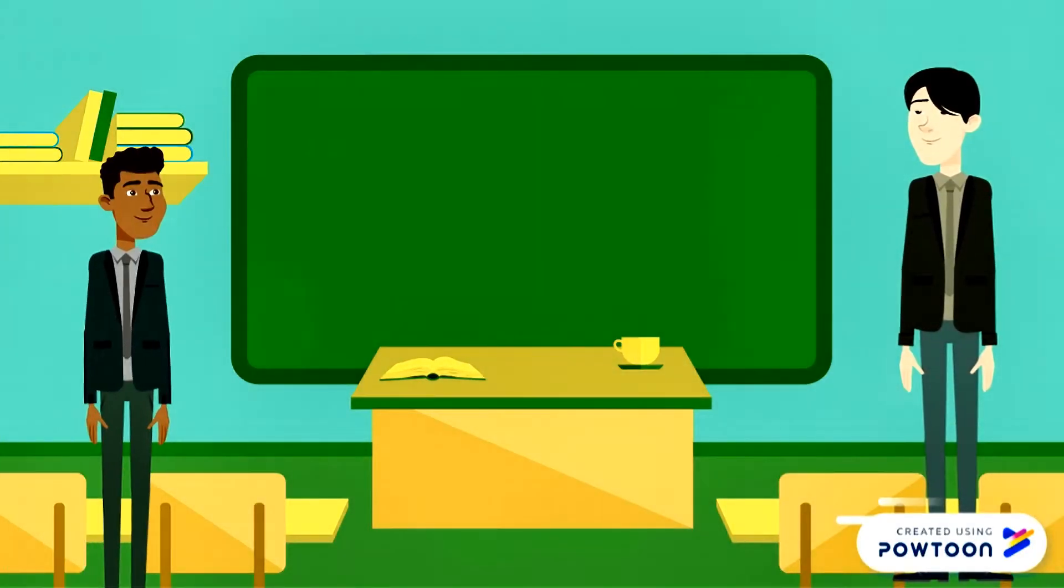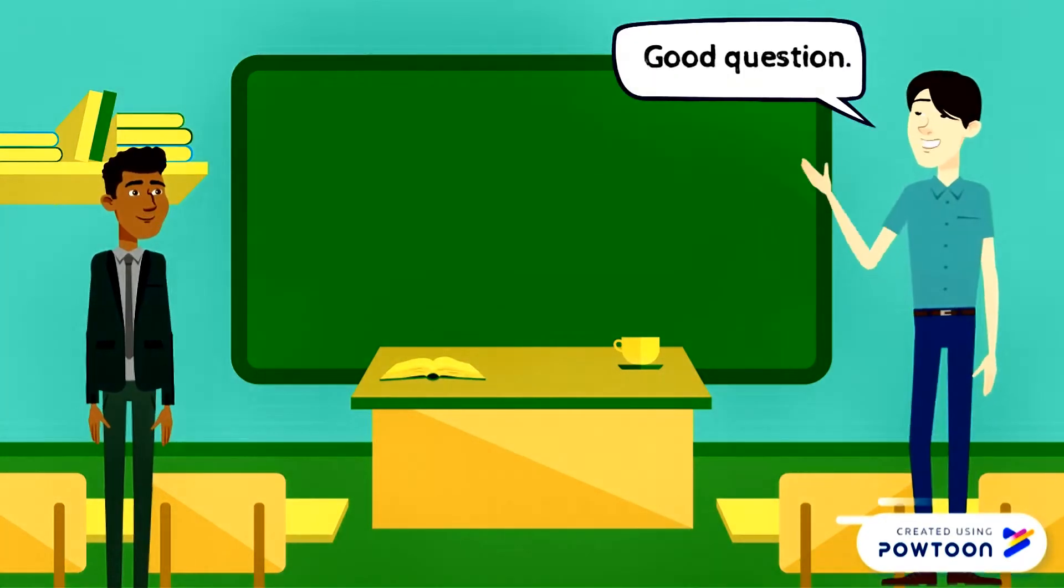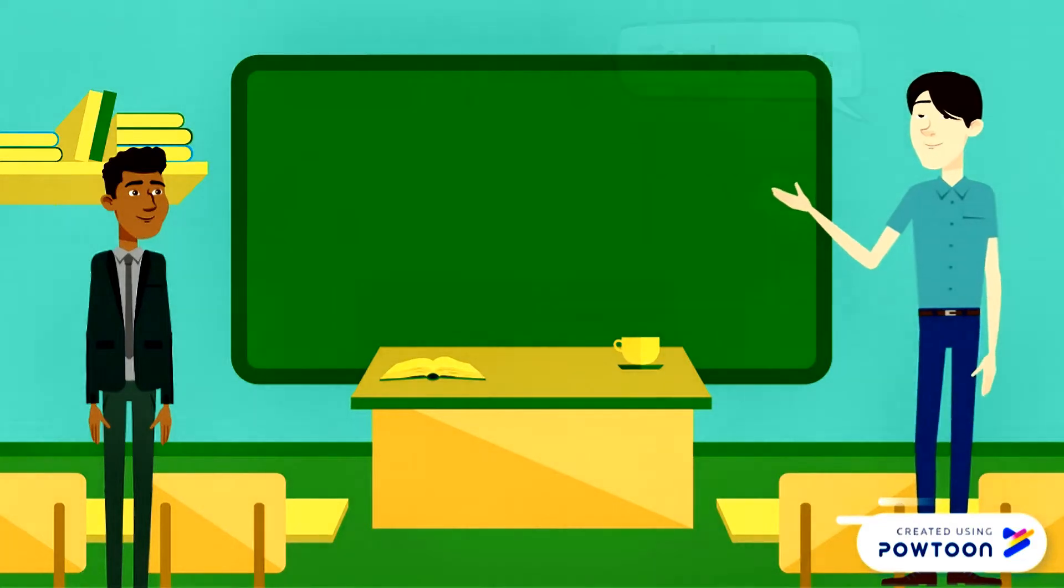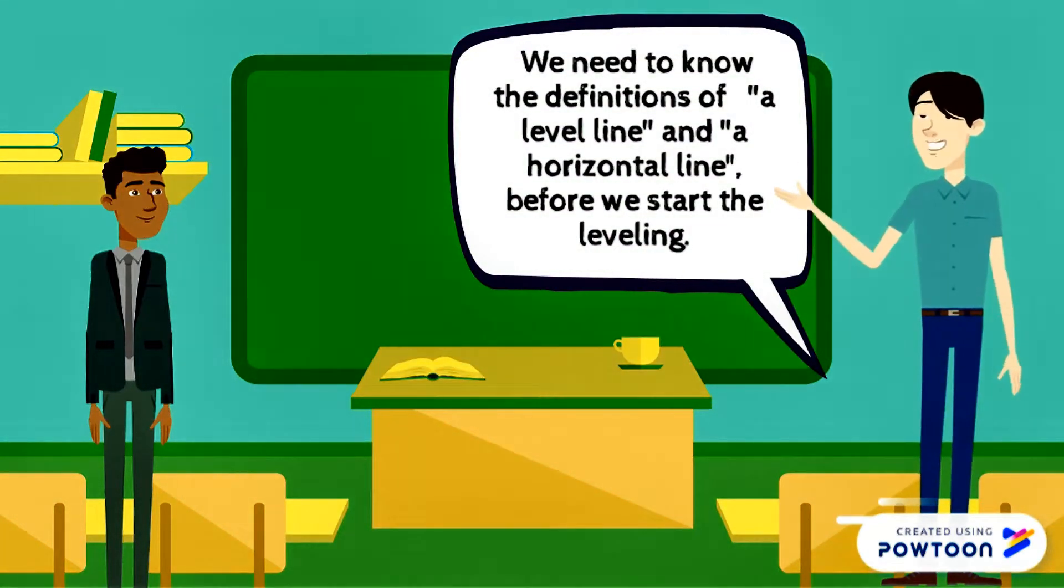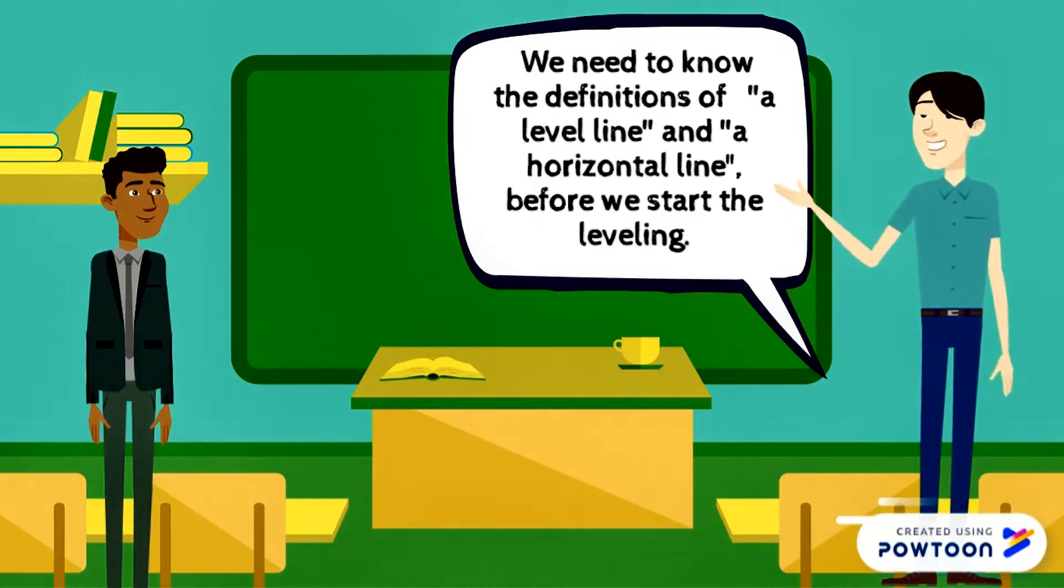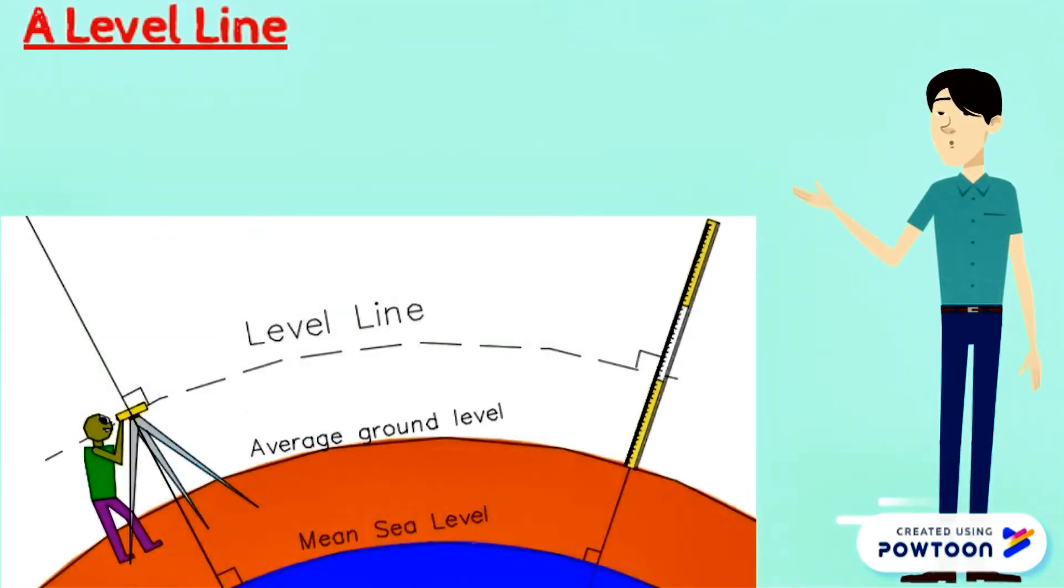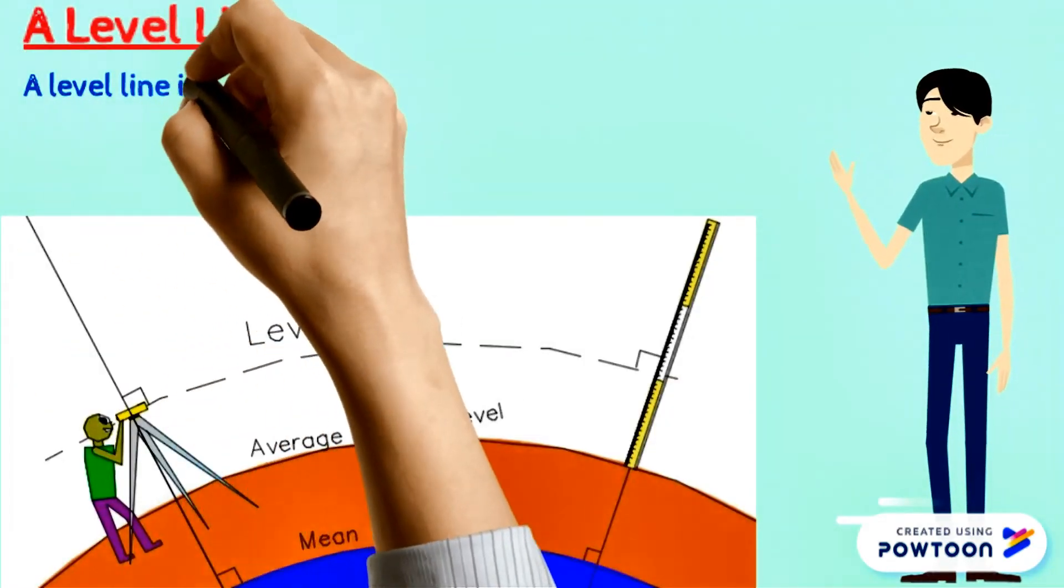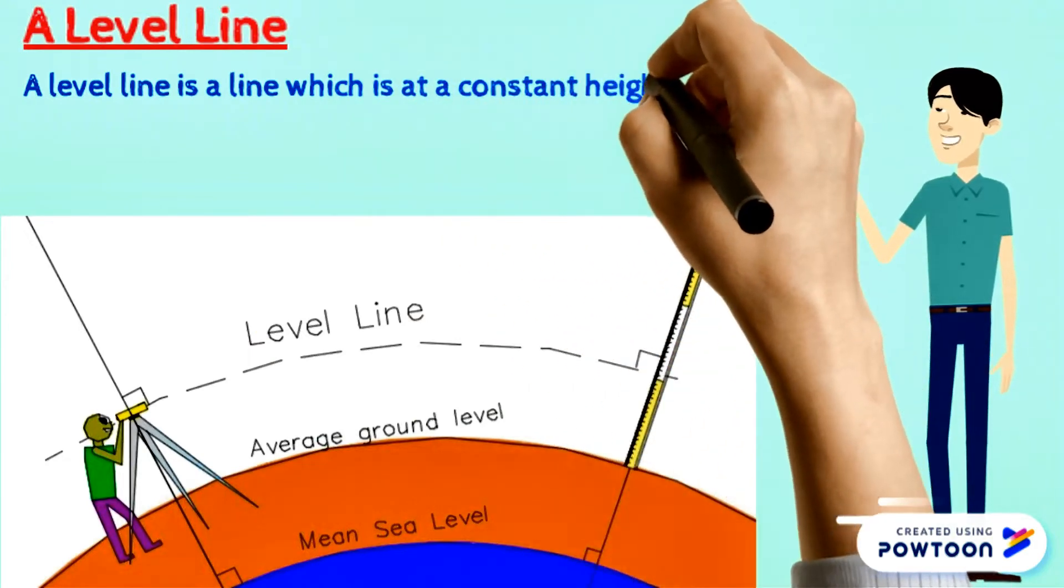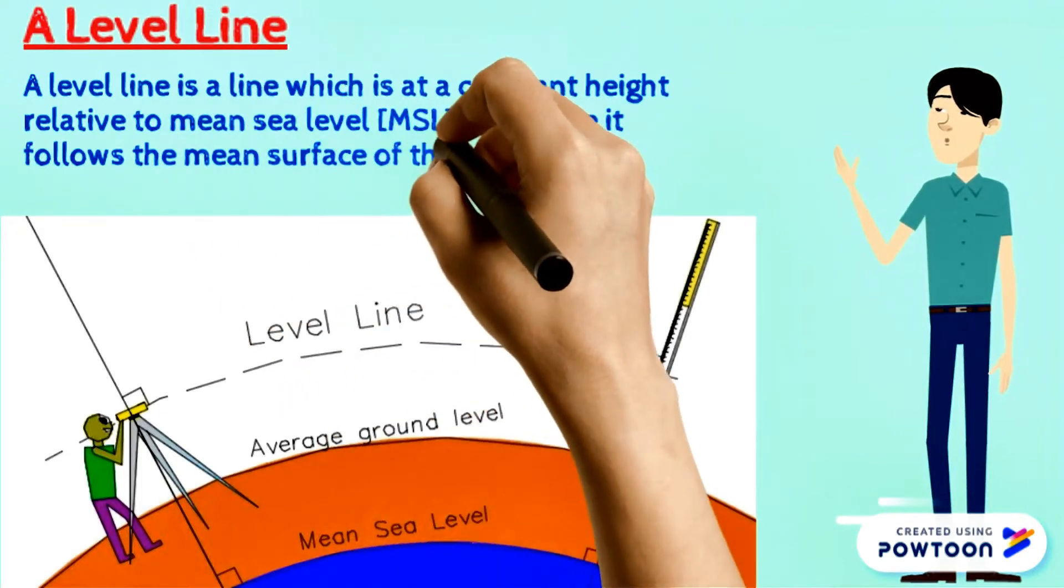What is a horizontal line? Good question. We need to know the definition of a level line and a horizontal line before we start the leveling. We'll see the definition of a level line. A level line is a line which is at a constant height relative to mean sea level, and since it follows the mean surface of the earth, it must be a curve.